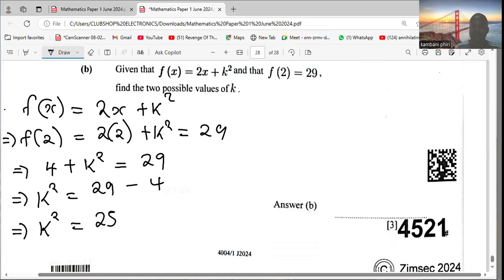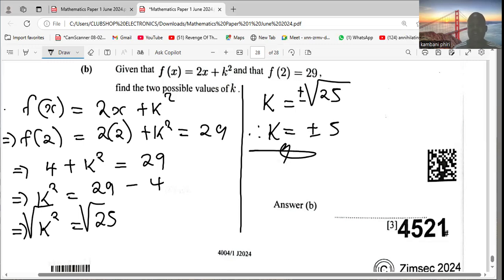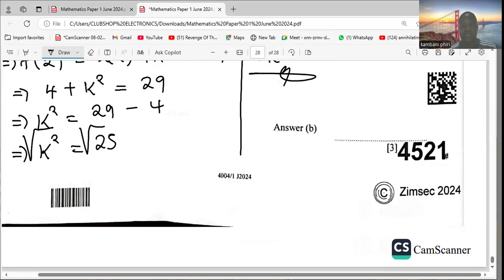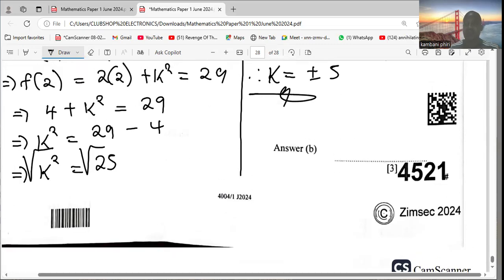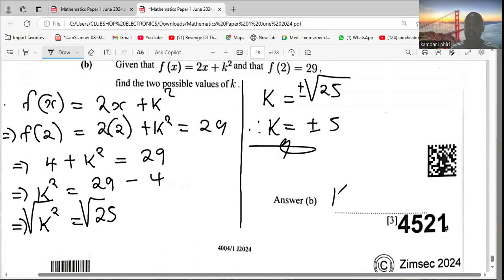Therefore we are supposed to find the square root of 25. So if you introduce square roots on both sides, therefore k is plus or minus the square root of 25, and hence k is ±5. And that is our solution. Therefore k is ±5.